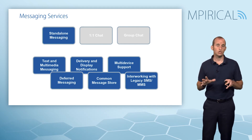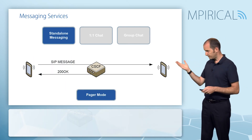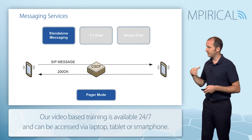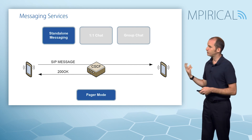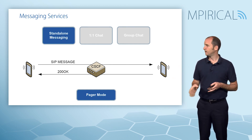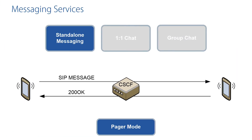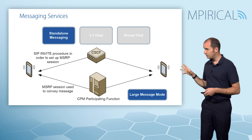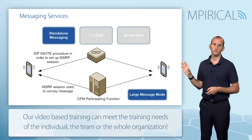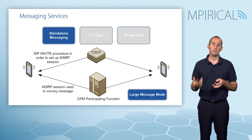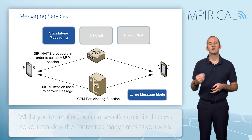With standalone messaging there are essentially two modes of operation. The first is pager mode — a typical message exchange using the SIP MESSAGE method, which carries whatever message as a payload, with a 200 OK to confirm receipt. In the middle, the call session control function coordinates the end-to-end delivery. Pager mode is suitable if messages are not over 1300 bytes. If they are over 1300 bytes, we need to use large message mode, which utilizes a protocol called message session relay protocol (MSRP). SIP is still used — a SIP INVITE procedure establishes an MSRP session, within which we can then send those bigger messages.